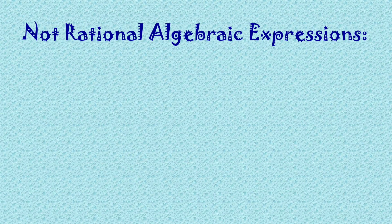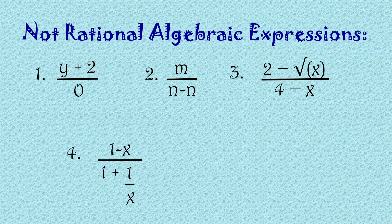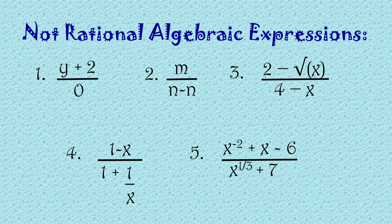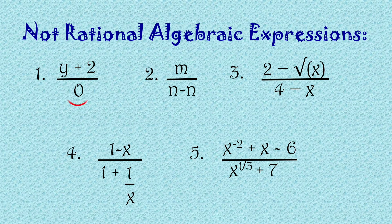So these are examples of not rational algebraic expressions. Ayan, napapansin nyo meron ng kakaiba sa ating given — ratio nga sya pero ang ating givens, yung ating numerator, merong hindi polynomials, at ang ating denominator ganun din. So check natin isa-isa kung bakit hindi sya rational algebraic expression.